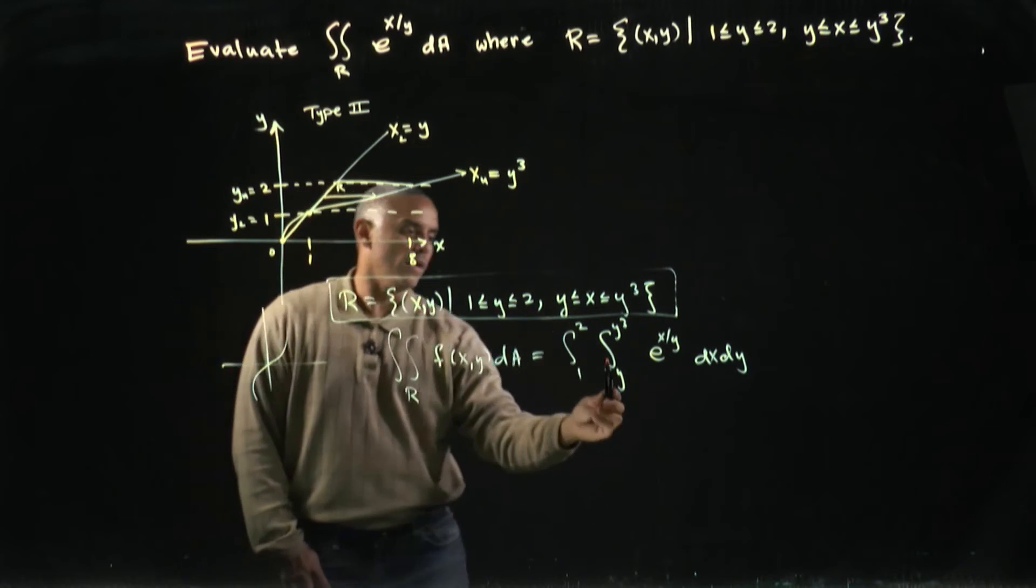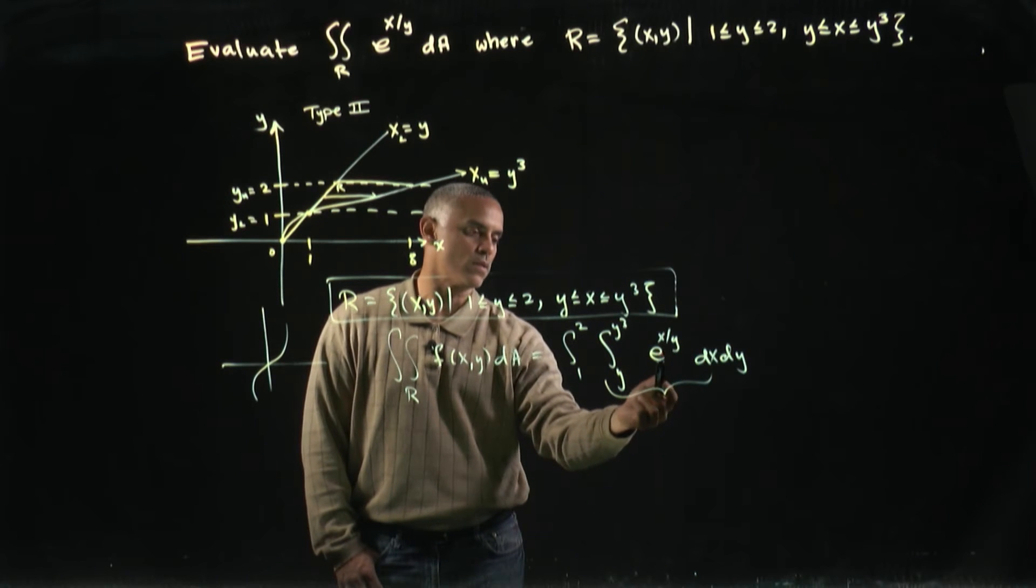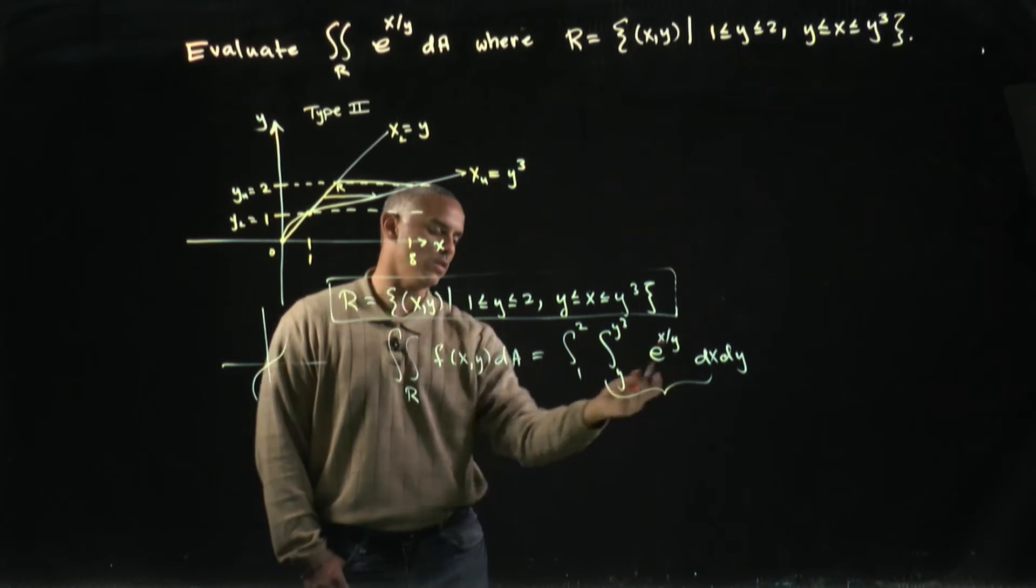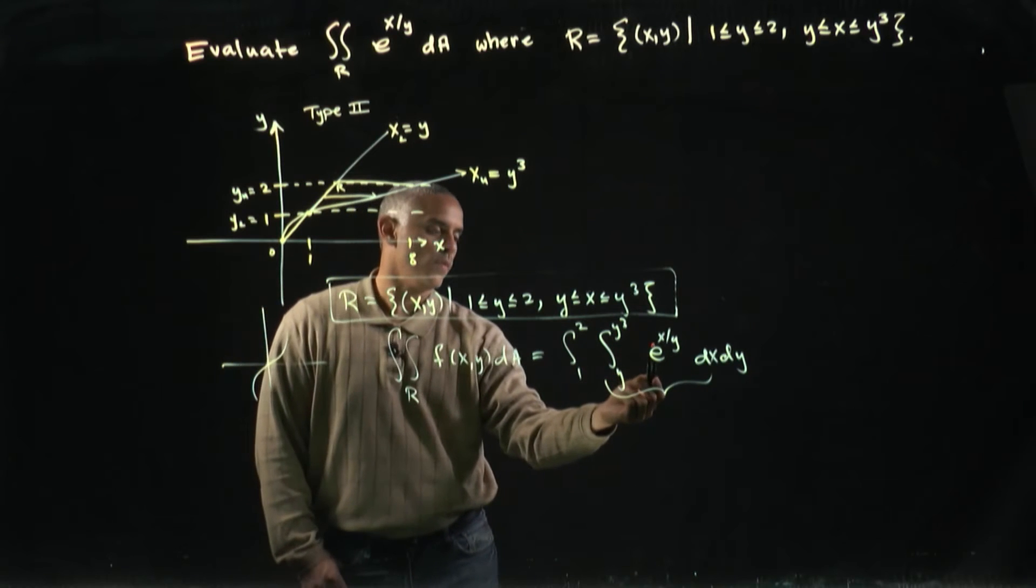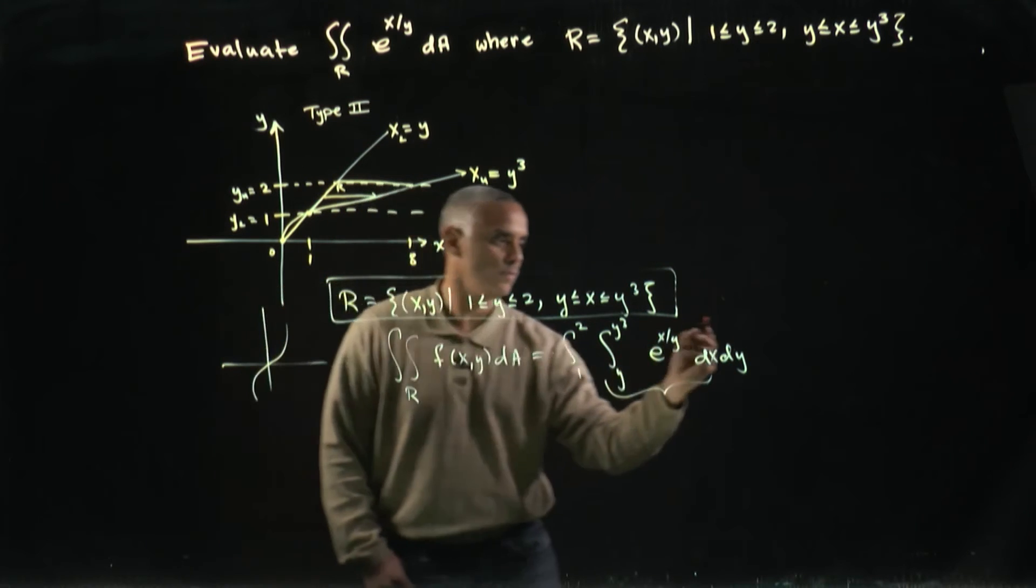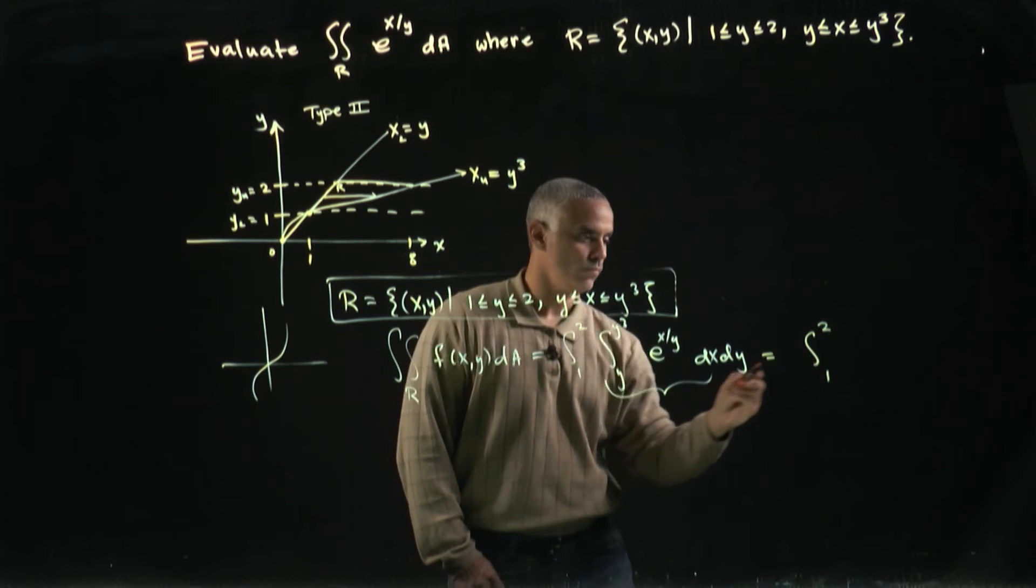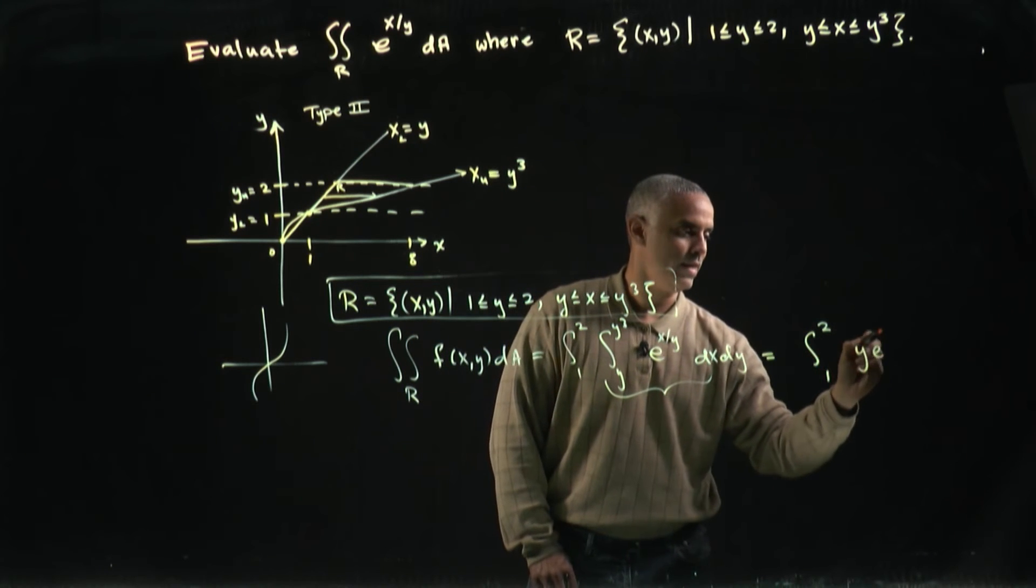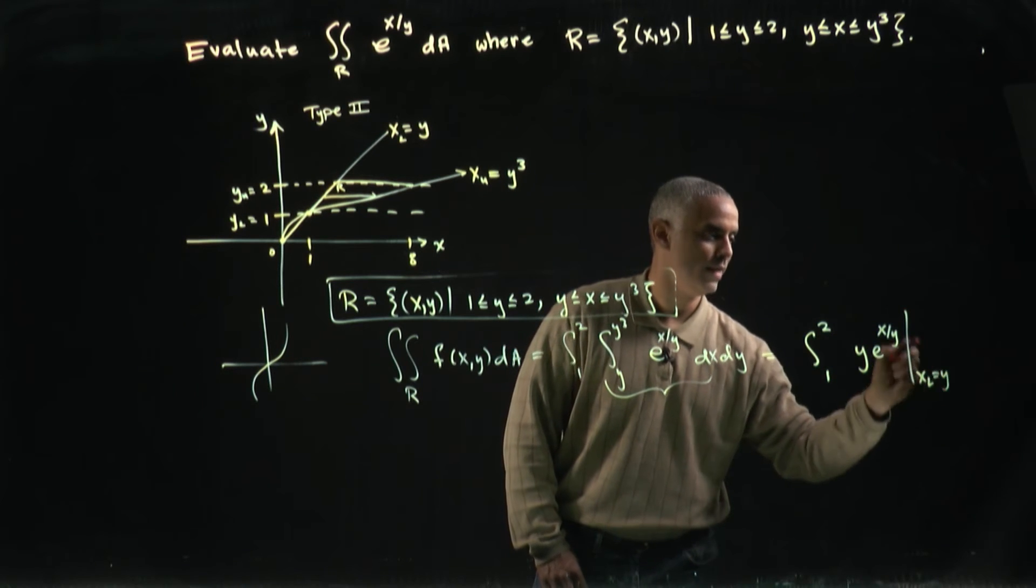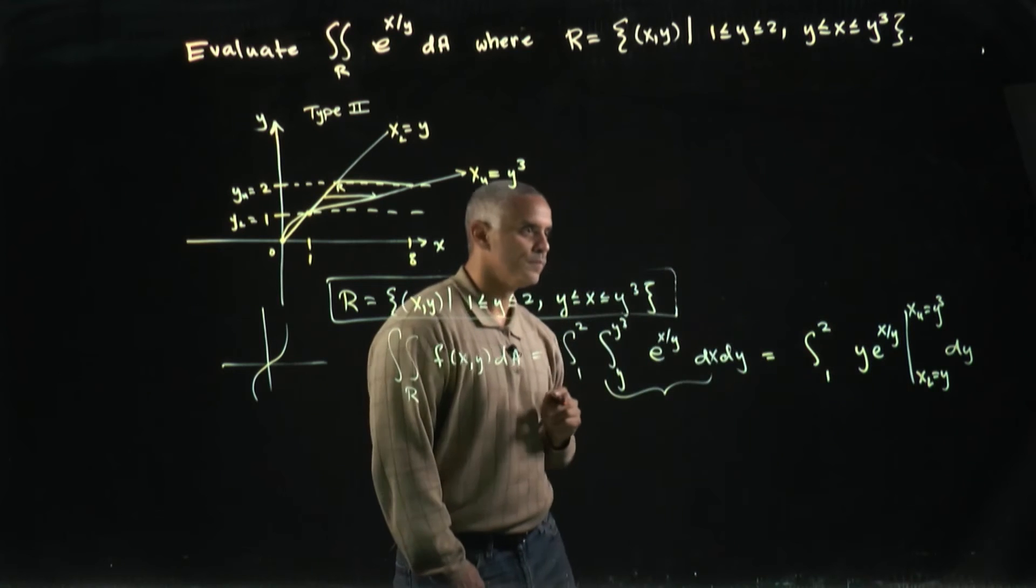Okay, so now, let's go ahead and do the inner iterated integral. If I integrate with respect to x, remember, the integral of e to the alpha x, well in this case alpha is one over y, would be one over alpha e to the alpha x. So, in this case, since alpha is one over y, one over one over y just becomes y. I can write this as the integral from one to two of y e to the x over y, evaluated from x lower equal y to x upper equal y cubed, dy.